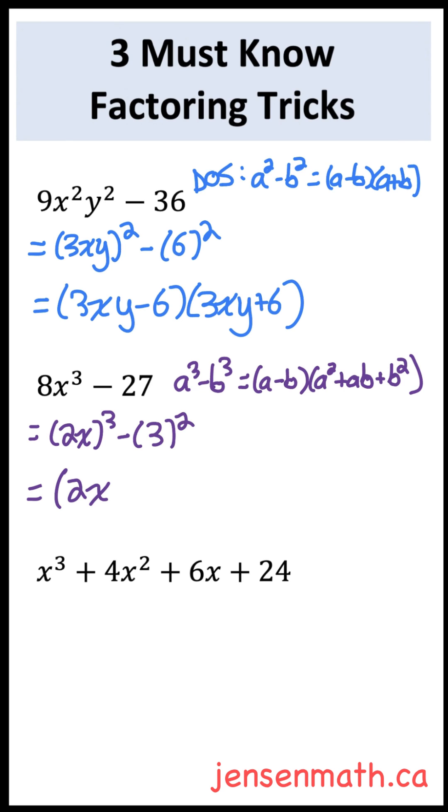It would factor to 2x minus 3 times 2x squared, which is 4x squared, plus 2x times 3, which is 6x, plus 3 squared, which is 9.